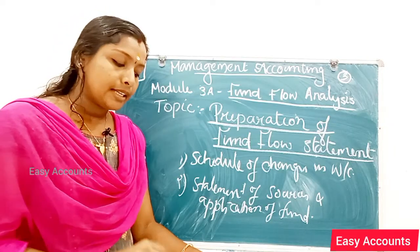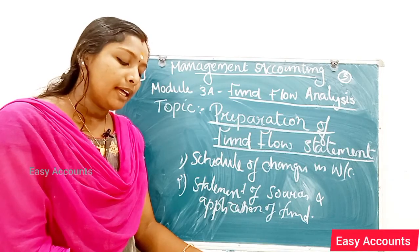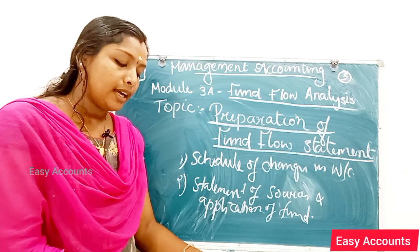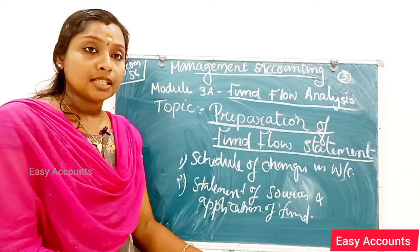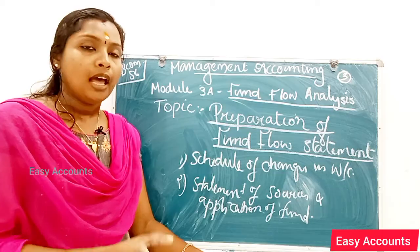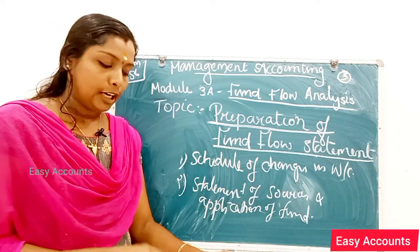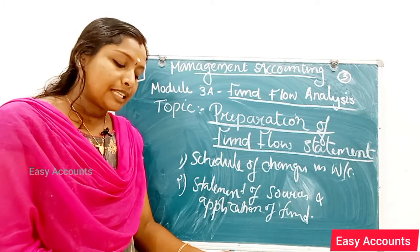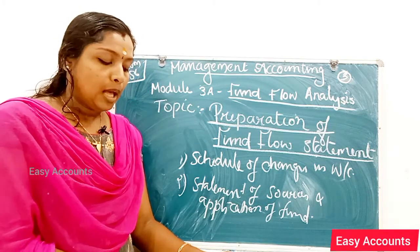What do we consider as current assets? Current assets are: cash in hand, cash at bank, bills receivable, sundry debtors, temporary investments, stock in trade, prepaid expenses, and outstanding income. Current liabilities include: trade creditors, bills payable, outstanding expenses, income received in advance, bank overdraft, and short-term borrowings.